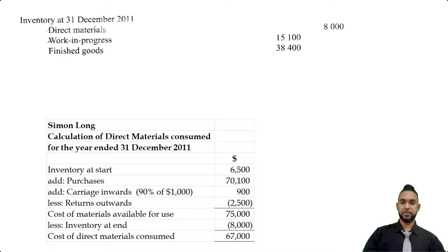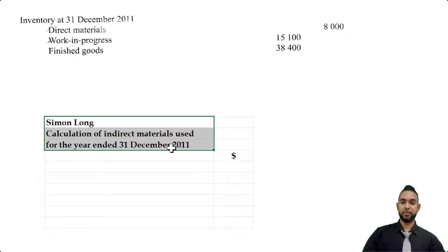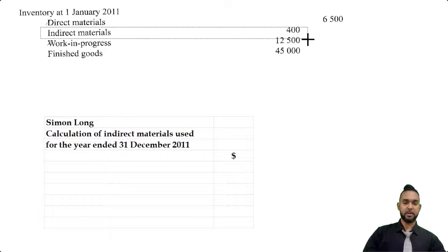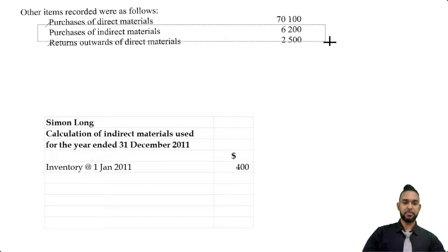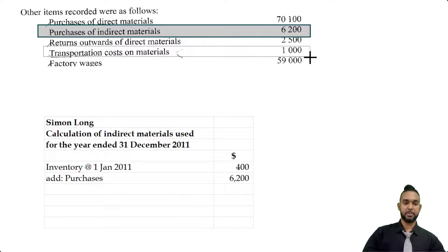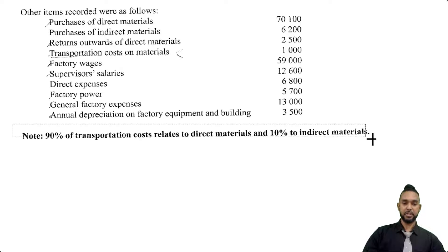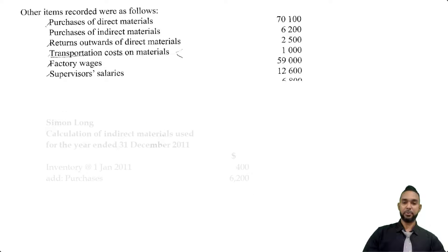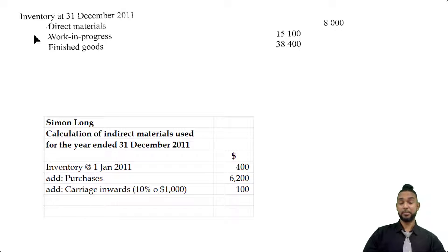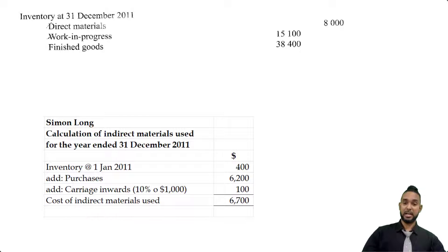We also need to do this calculation for indirect materials. We have opening stock of indirect materials of $400, purchases of indirect materials of $6,200, and we add 10% of the $1,000 transportation costs, since the note told us 10% relates to indirect materials. In the closing inventory section there was no closing inventory for indirect materials, and there were no returns on indirect materials either.